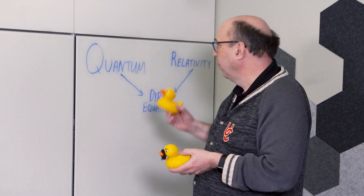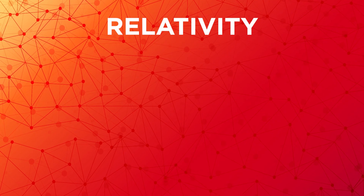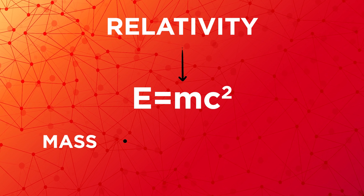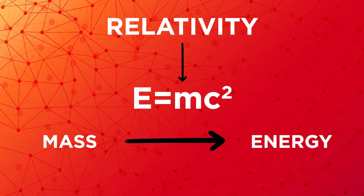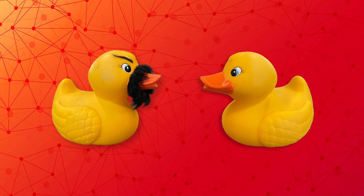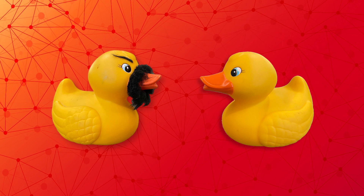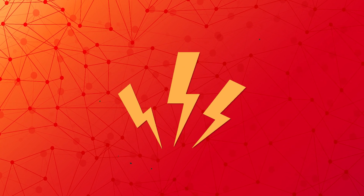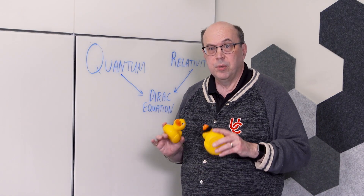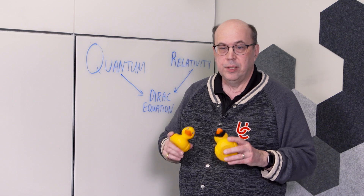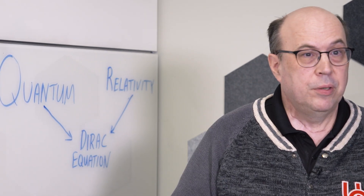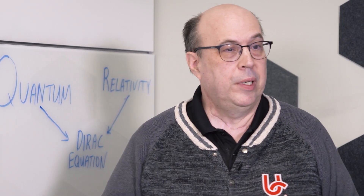So if antimatter exists, what can we do with it? Relativity says E=mc² allows us to convert mass to energy. With antimatter and matter, because they are perfect mirror images, when the two meet they annihilate and convert all of their mass to energy. That's by far the most efficient way to generate energy. Why don't we use it? Because we don't know where the antimatter is, and we don't know how to make it — at least not efficiently.